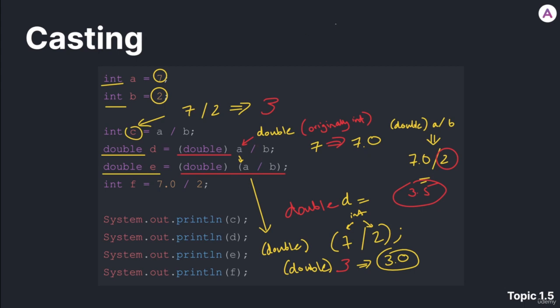So just to recap, this is the same, would yield the same value. This would yield the same value because we're casting one, at least one of each of the dividend or divisor, in this case the dividend, in this case the divisor, to a double, which means the entire expression is evaluated like a double.